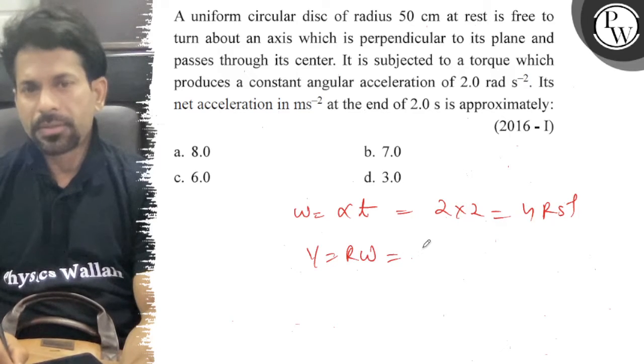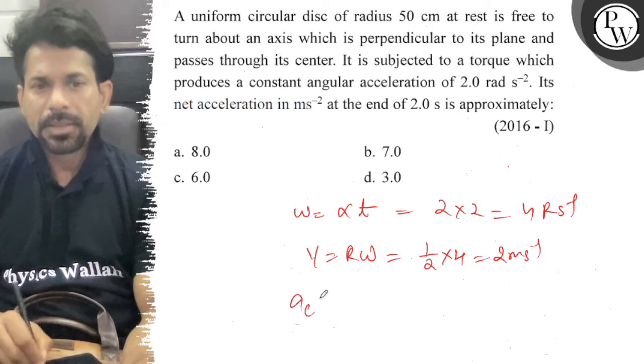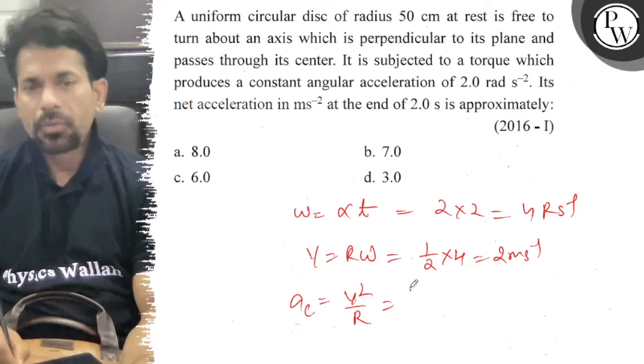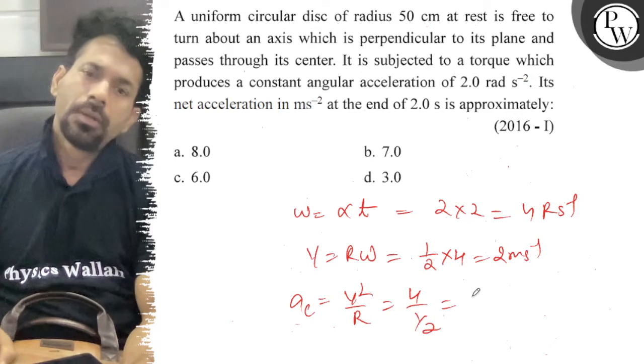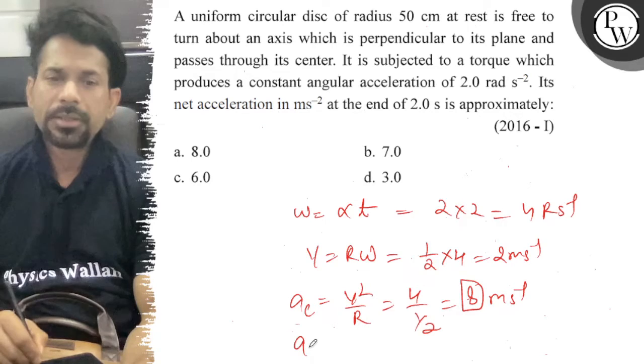So v = 0.5 × 4 = 2 m/s. The centripetal acceleration ac = v²/r = 4/0.5 = 8 m/s². Now for the tangential acceleration.